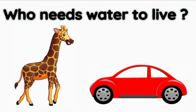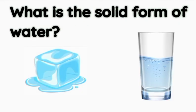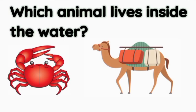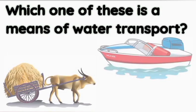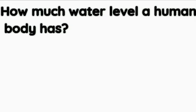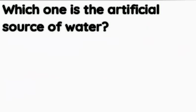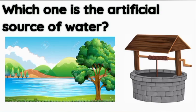Now let's see a few practice questions. Who among these needs water to live? Giraffe. Where do we get all the water from? Rain. What is the solid form of water? Ice is the solid form of water. Which animal lives inside the water? Crab. Which one of these is a means of water transport? Boat. How much water does a human body have? 70%. Which one is the artificial source of water? Well.